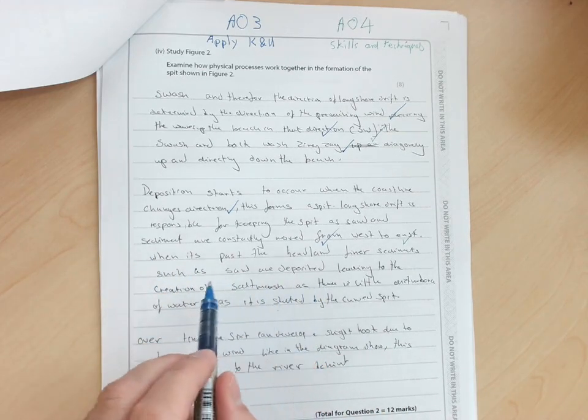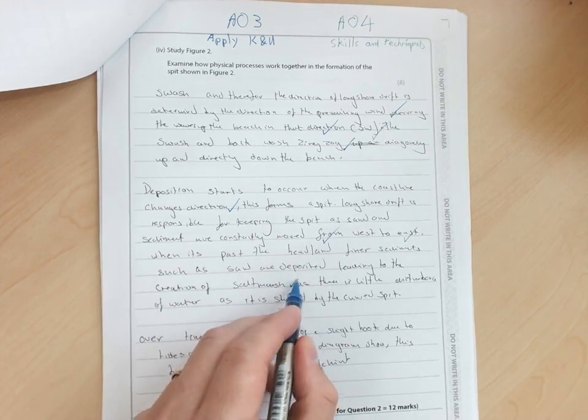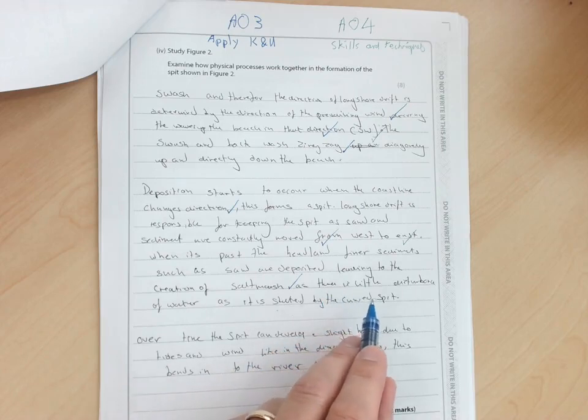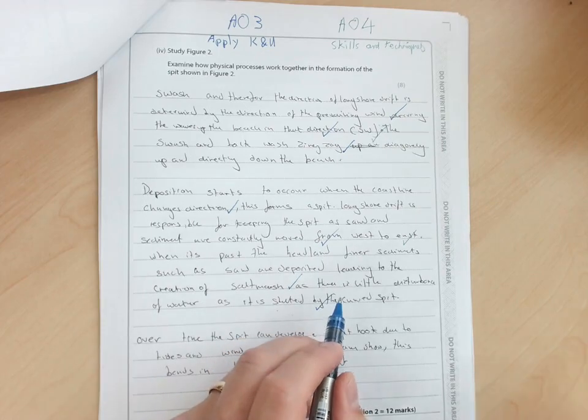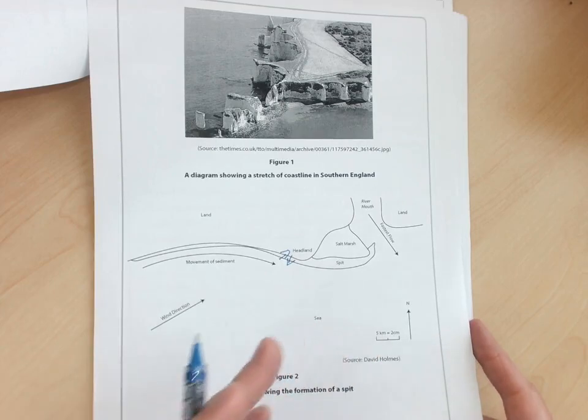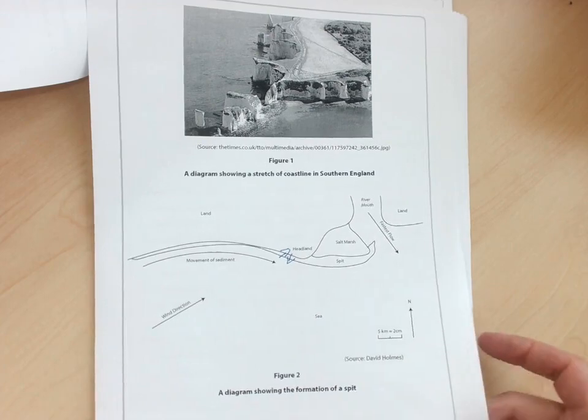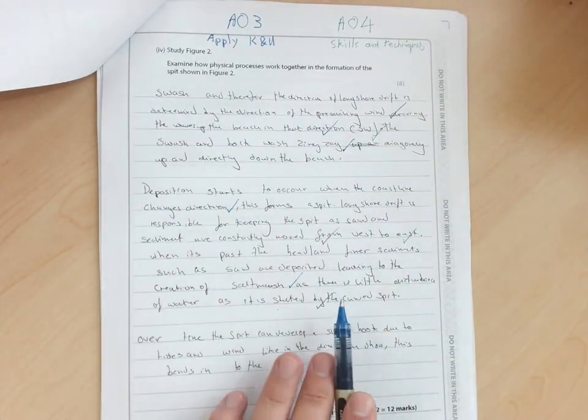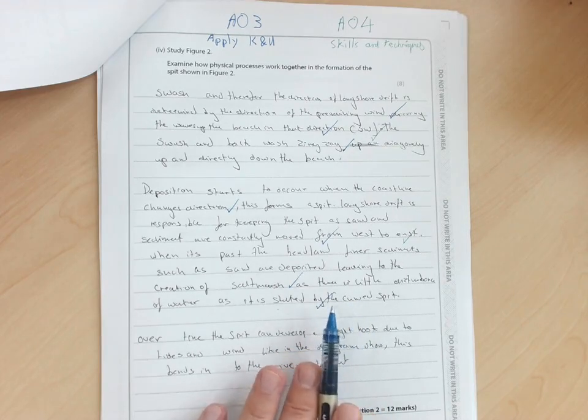When it's past the headland, finer sediments such as sand are deposited in the creation of a salt marsh, as there is little disturbance of water as it is sheltered by the curved spit. Now there's an opportunity there where she could have made it maybe a bit clearer that it's being sheltered by the spit in this diagram, rather than simply that is what generally happens. There's a sense to which you might get AO4 marks here, but it's implied, and you should aim towards making it really explicit.